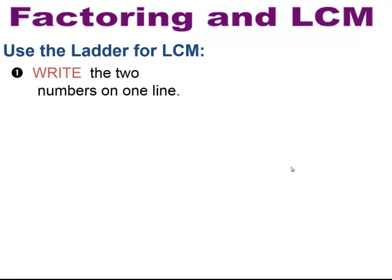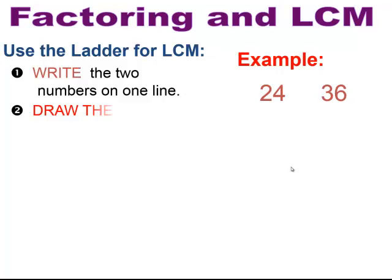How the ladder method works is you're going to write the 2 numbers in a row. So we have 24 and 36, and I want to find the least common multiple. I'm going to write the 2 numbers in a row and then draw an L shape around it.